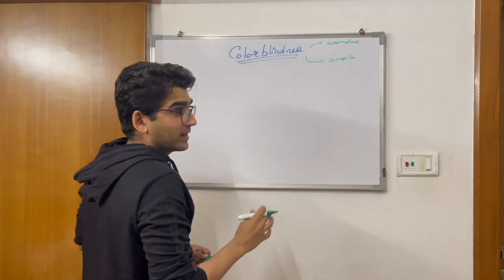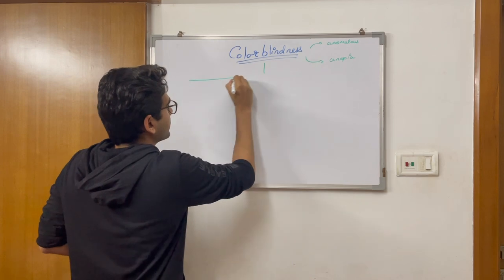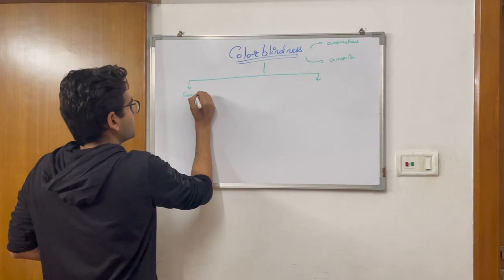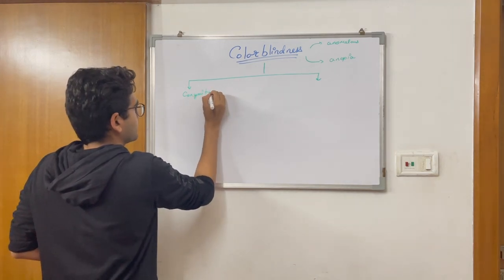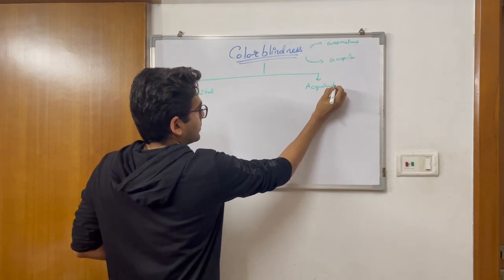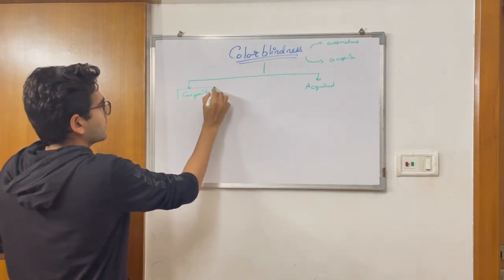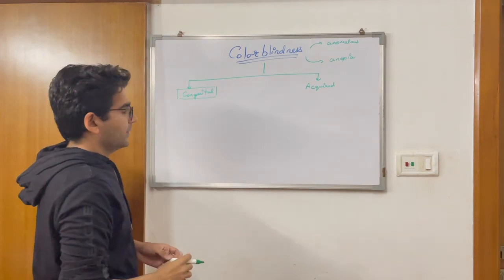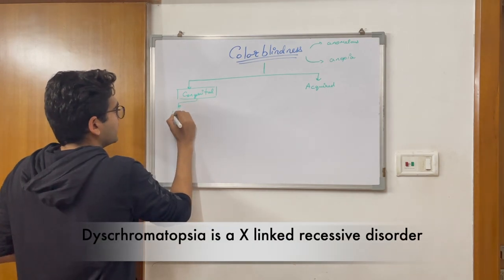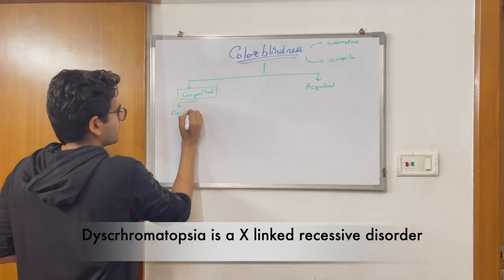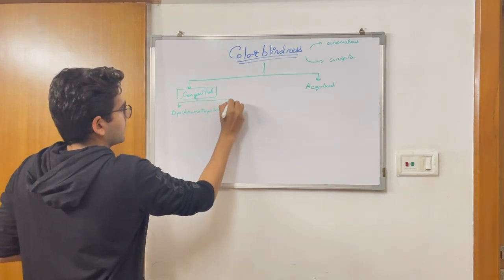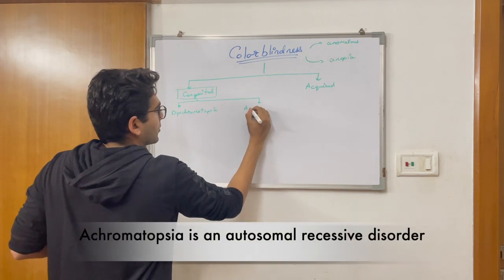Now, color blindness clinically can be further divided into two types: one is congenital, and the other is acquired. Congenital can be further subdivided into dischromatopsia and achromatopsia.